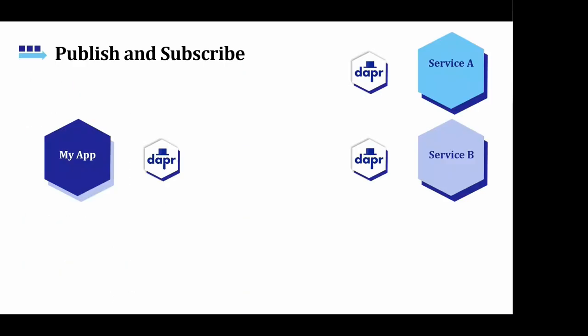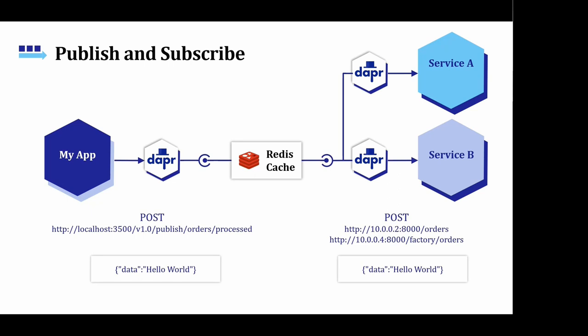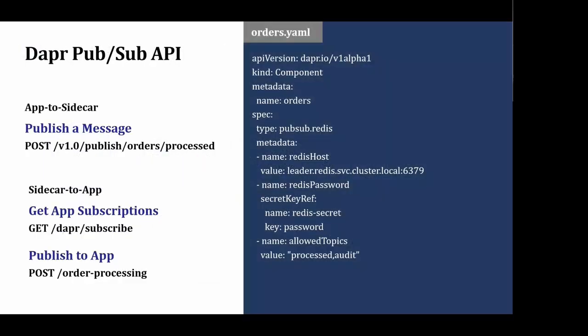Similarly for the publish-and-subscribe messaging pattern, by now you may have noticed a pattern emerging. If your application wants to publish an event, all you do is issue an HTTP request to your DAPR sidecar, and it takes care of discovering and delivering your event to all subscribers as HTTP requests as well. The underlying message broker can be configured using YAML files. To publish a message, you send an HTTP POST to your DAPR sidecar. To subscribe, you send an HTTP GET, and messages are delivered as HTTP POST to your application by the sidecar.